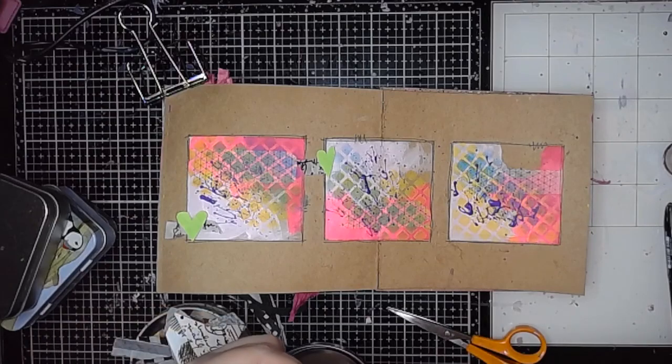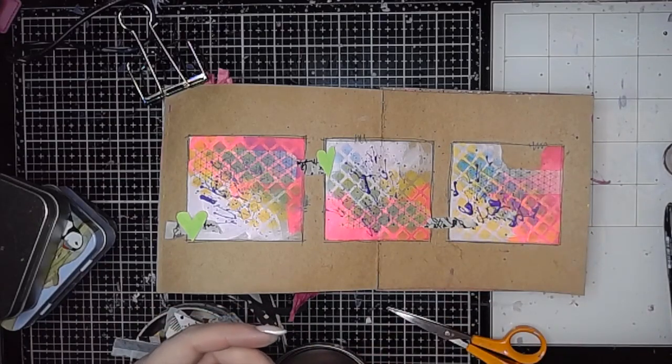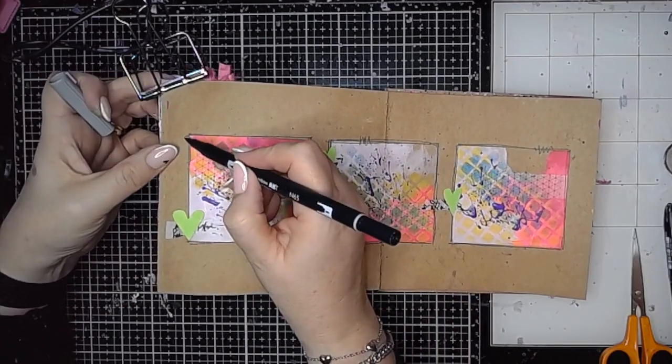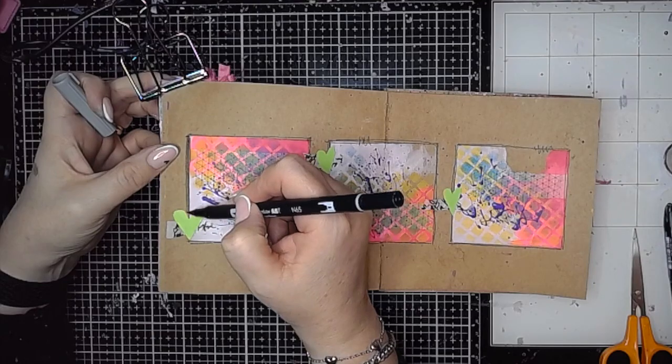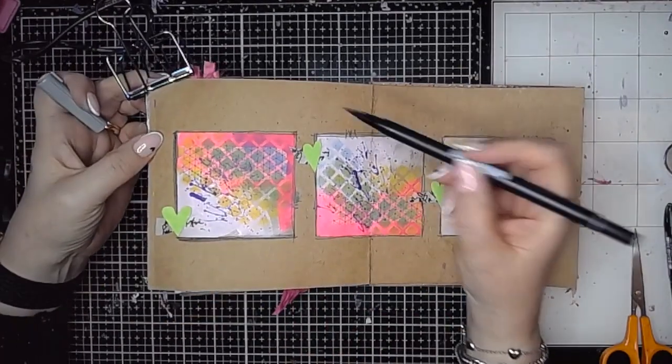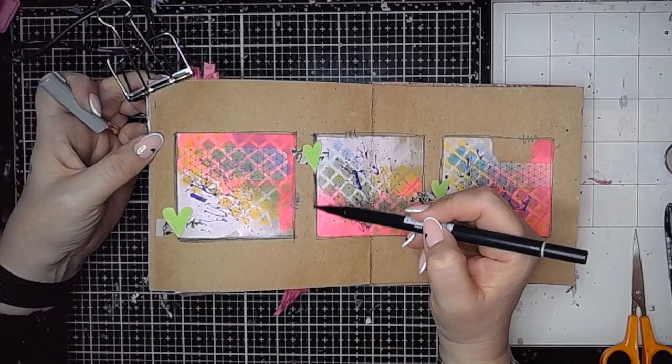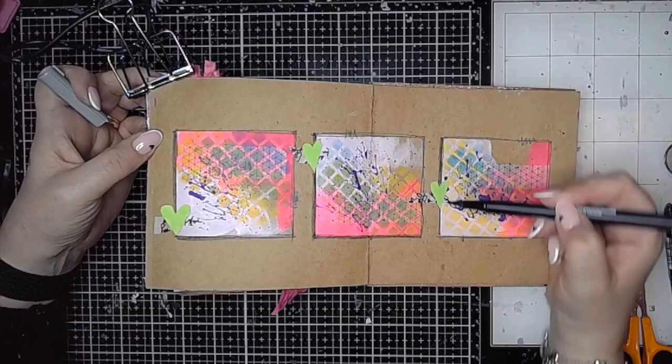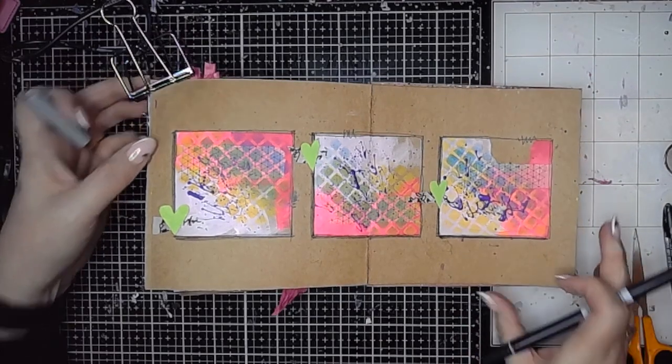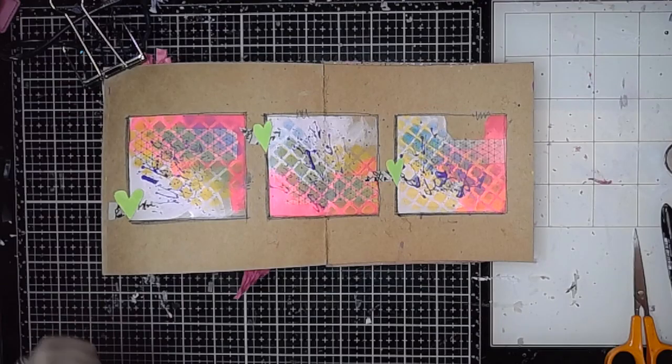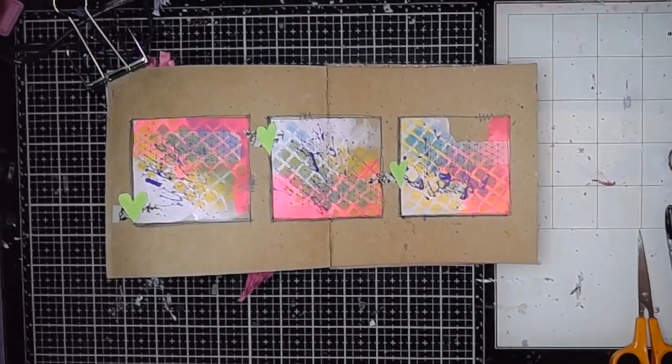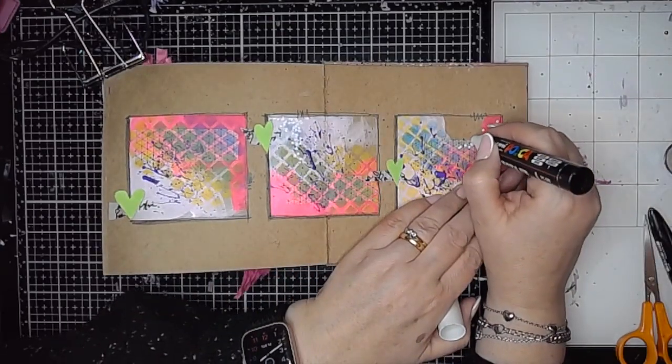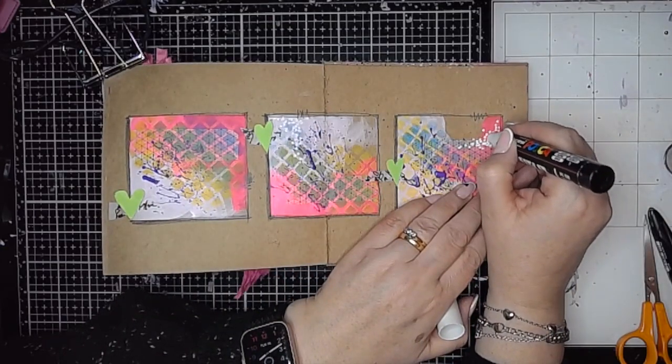I stuck those in place and then I'm just using a Tombow marker and I'm just adding a little shadow - not a highlight, Clare - a shadow to one side of each of the boxes just to give a little bit of a 3D effect there to pop those away from the background. And then of course got to be time for some white dots, just adding a few in each of the boxes.